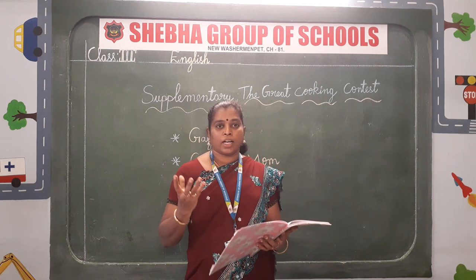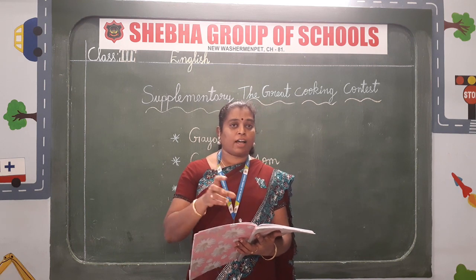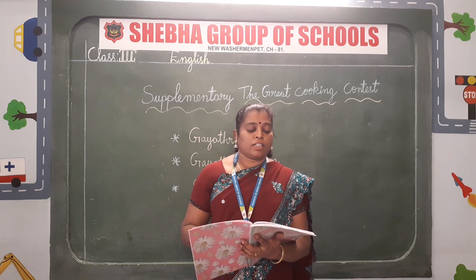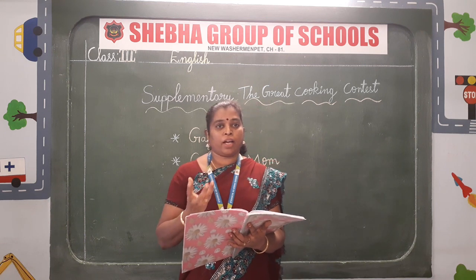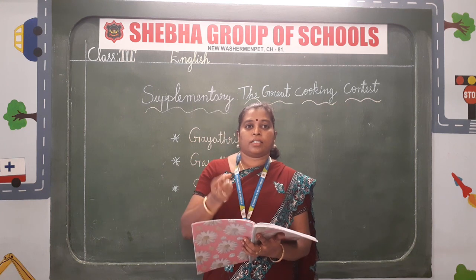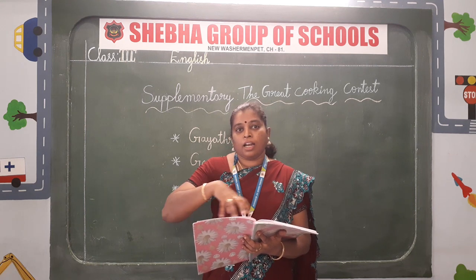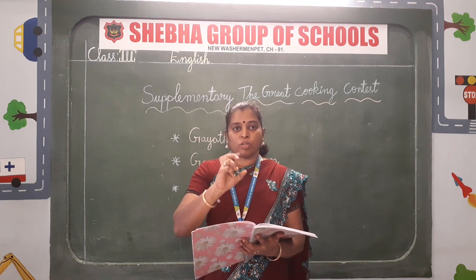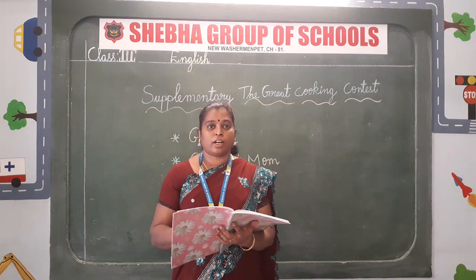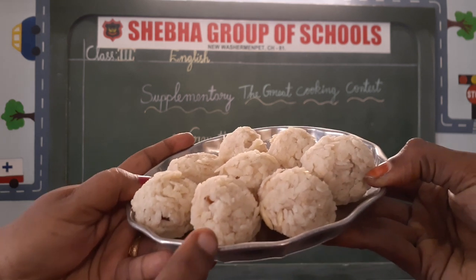She took a cup of aval and soaked it in water. Then she added dry nuts and honey, mixed it well, and rolled them into eight laddus. Gayatri made eight aval laddus.